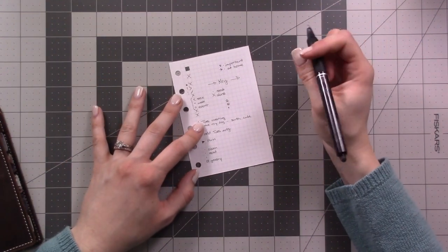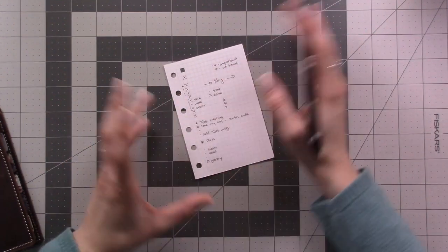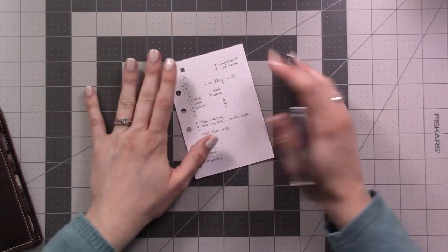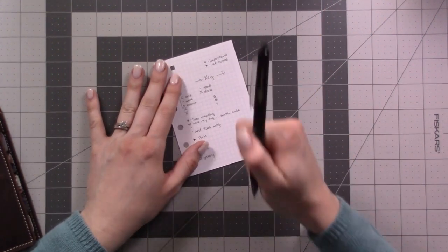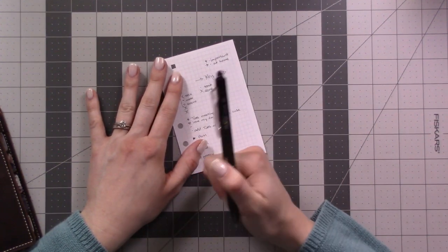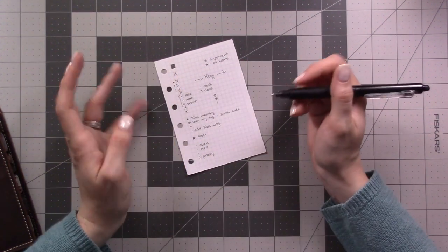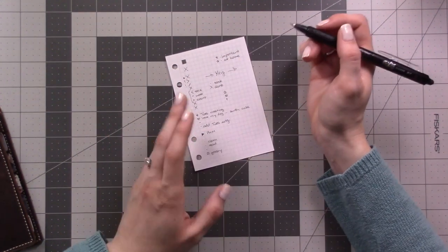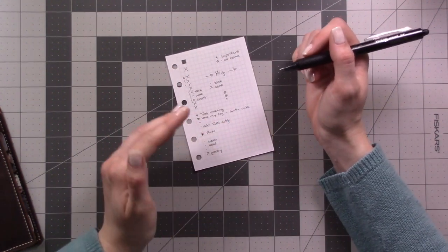Really just use it as it comes and just don't make it complicated because the bullet journal system is all about being quick and efficient. So just use whatever makes sense to you. Like if using a star doesn't mean important to you, then don't force it. Use what makes sense.